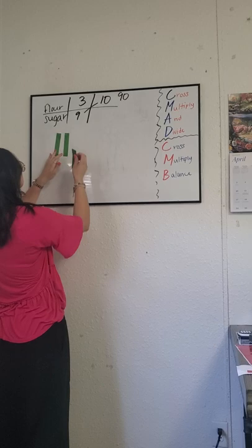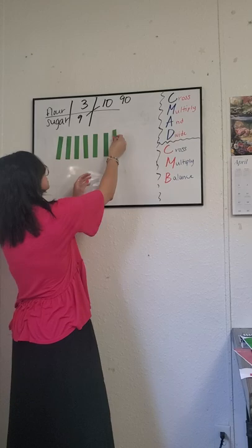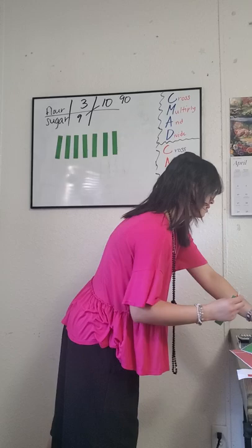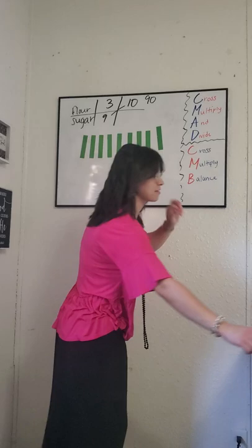9 10s to make 90. 10, 20, 30, 40, 50, 60, 70, 80, and 90. So, there's our 90 that we got here by cross multiplying.